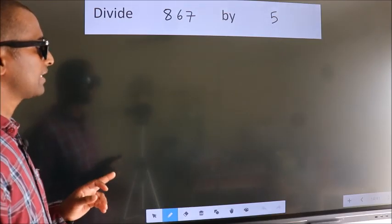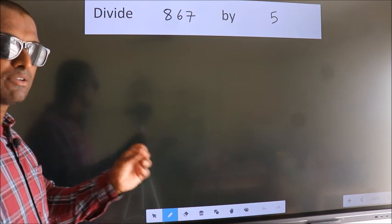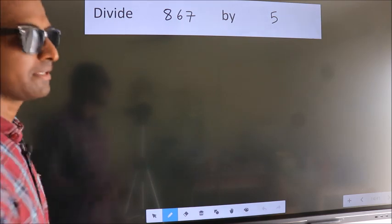Divide 867 by 5. To do this division, we should frame it in this way.